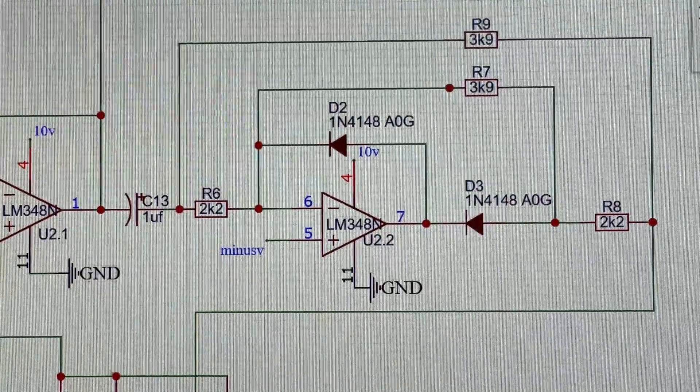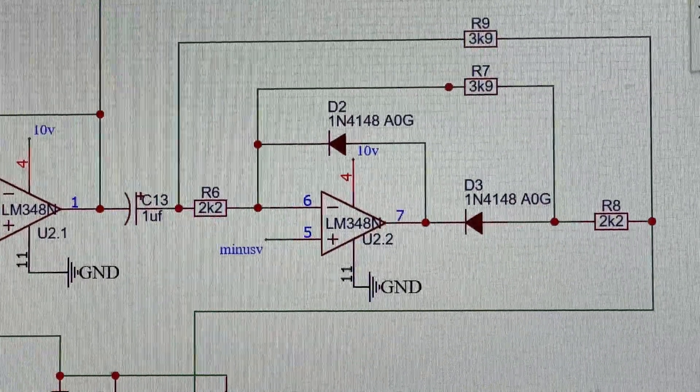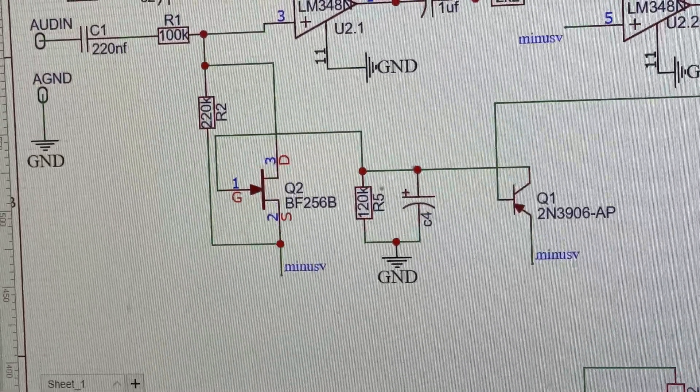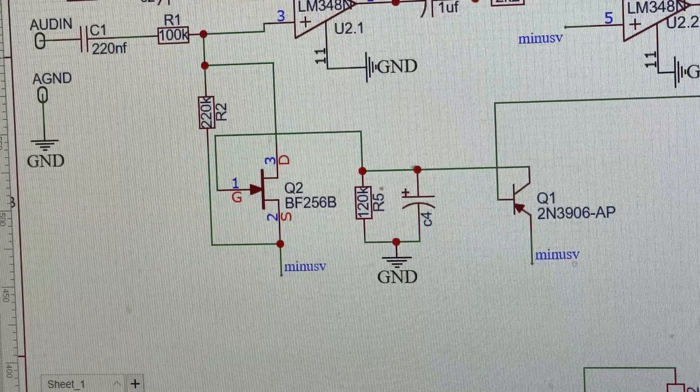So this is actually part of the AGC or automatic gain control circuit. We've got two parts of the op amp, transistor and a FET that feed back onto it and keep the gain at a constant level.